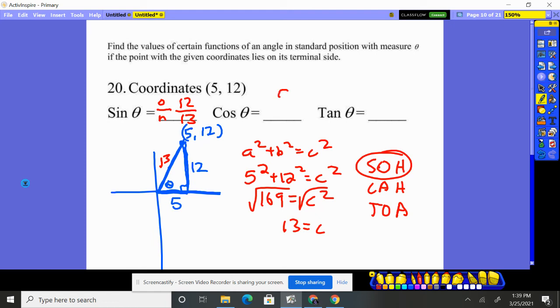Cosine, adjacent 5, over hypotenuse 13. Tangent, opposite which is 12, over its adjacent side 5. That's all they need.